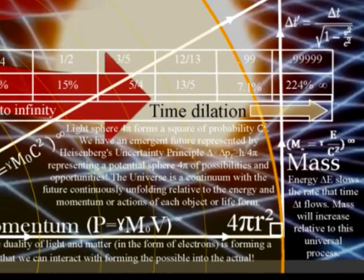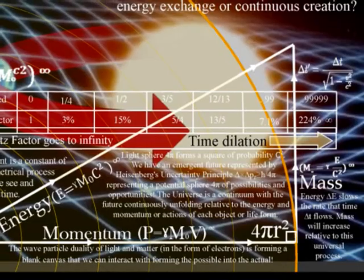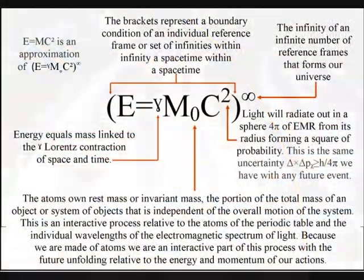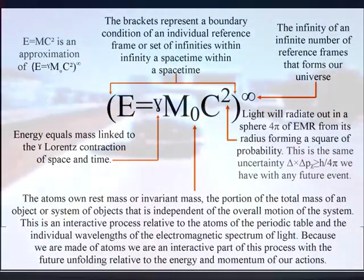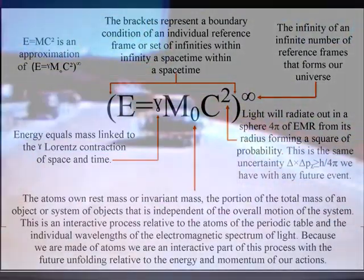In this theory, mass is a byproduct of time dilation. When time slows down, it takes more effort to move an object from A to B, and this is seen as an increase in mass. Also, Einstein's equivalence principle between gravity and acceleration falls out of this theory.